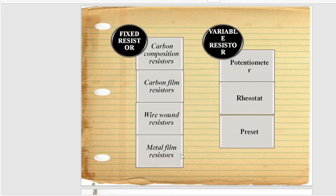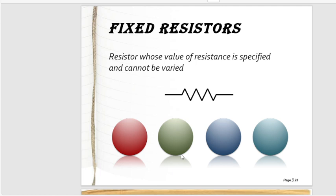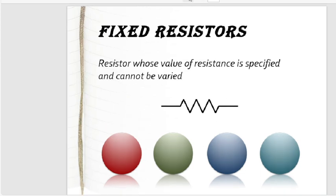Resistors are further subdivided into fixed resistors and variable resistors. Fixed resistors include carbon composition, carbon film, wire wound, and metal film resistors. Variable resistors include potentiometers, rheostats, and presets. A fixed resistor is one whose resistance value is specified and cannot be varied.